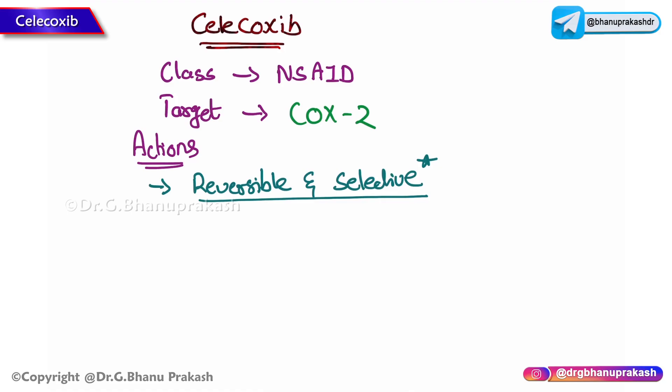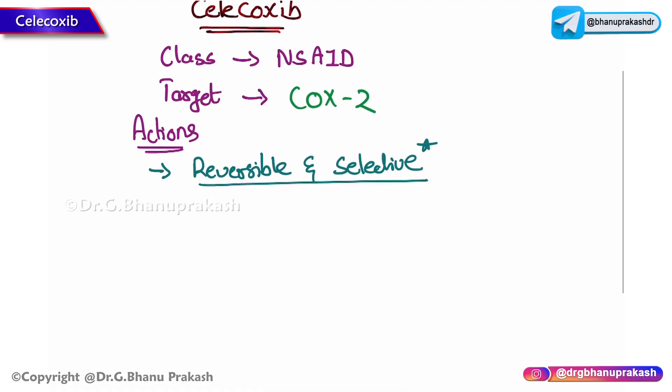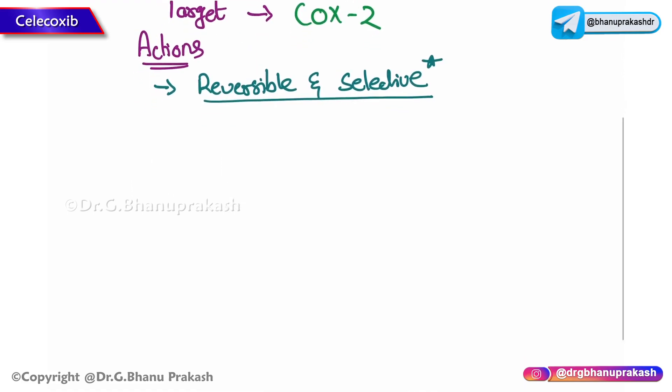The COX-2 isoform mediates inflammation, pain, and fever. Therefore, this drug can be given to reduce inflammation, and it can be used as an analgesic as well as an antipyretic. COX-2 is also prevalent in inflammatory cells as well as in the vascular endothelium.